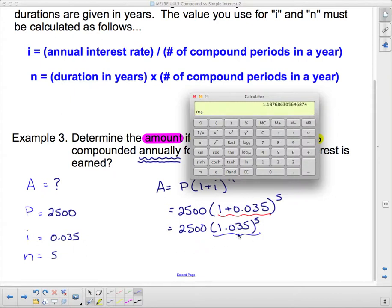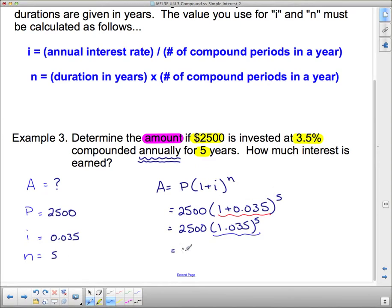So I'm going to put 2 the exponent, and in this case, 5. And then, without writing anything else down, now that I've got this answer, I'm going to multiply that by 2,500. And now I have my final answer. 2,969 and 22. This one is going to round to a 2 because it has a 5 after it. 2,969, 22. And that's how much we have afterwards.